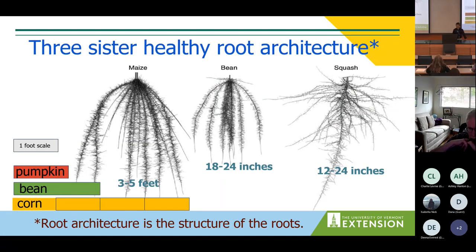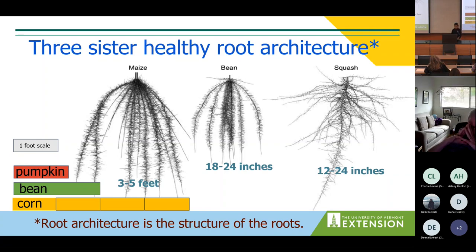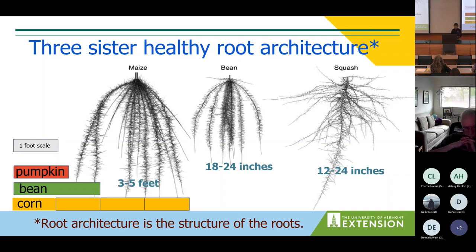The health of the plants depends on the health of the roots. All plants have a standard 45-degree angle off the lateral roots. Corn falls between a deep and shallow root system — deeper roots may reach up to five feet into the soil, but most development happens in the upper three feet. Beans have roots ranging from 12 to 24 inches, but deeper feeder roots may reach up to 48 inches. Squash have relatively short roots ranging from 12 to 24 inches.